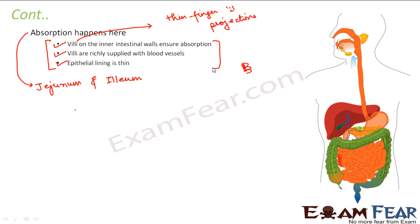In summary: the duodenum assists digestion using pancreatic and intestinal enzymes in an alkaline medium created by bile juice. The jejunum and ileum assist absorption using thin finger-like projections called villi, which absorb nutrients and pass them to blood vessels that carry them throughout the body. The thin epithelial lining also aids this transfer.